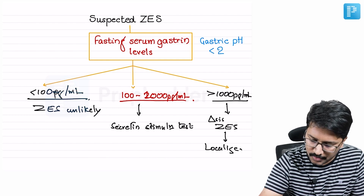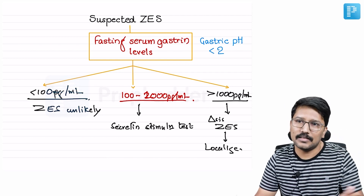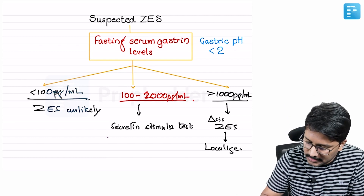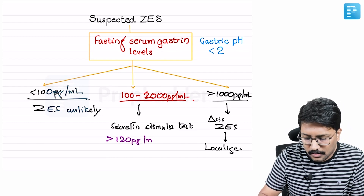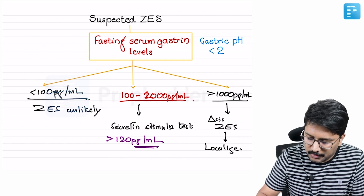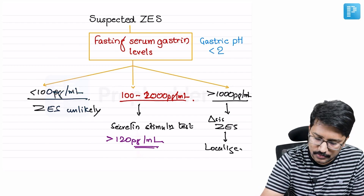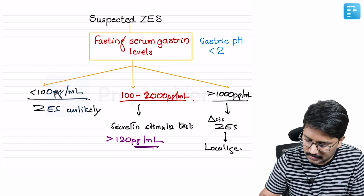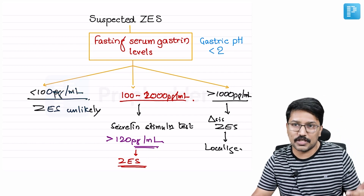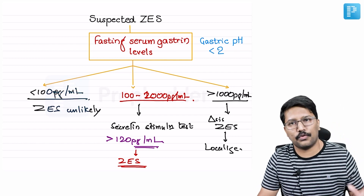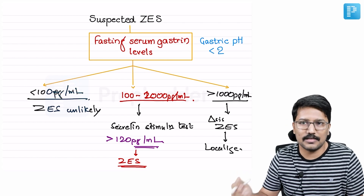When we do the secretin stimulation test, if the patient has a gastrinoma, secretin will increase gastrin production. If gastrin increases by more than 120 to 125 picograms per ml after secretin administration, you arrive at the diagnosis of Zollinger-Ellison syndrome. If not, ZES is unlikely and you have to look for other causes of hypergastrinemia. If the rise is only around 50 to 60 picograms over the baseline reading, you look for alternative causes.